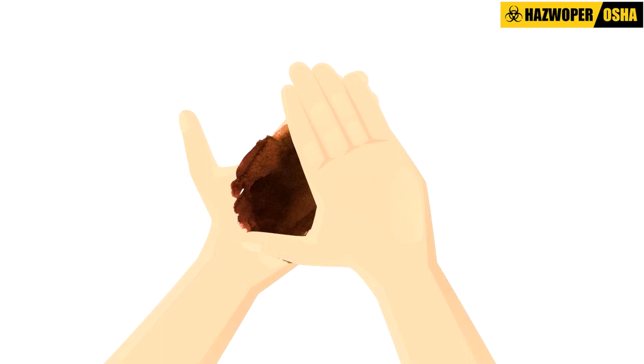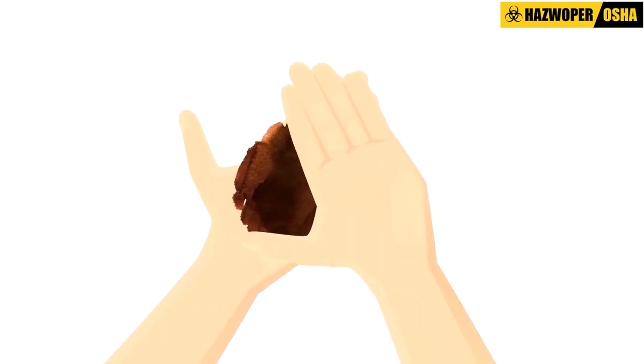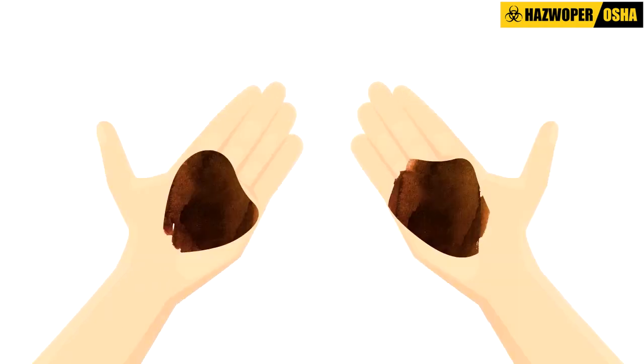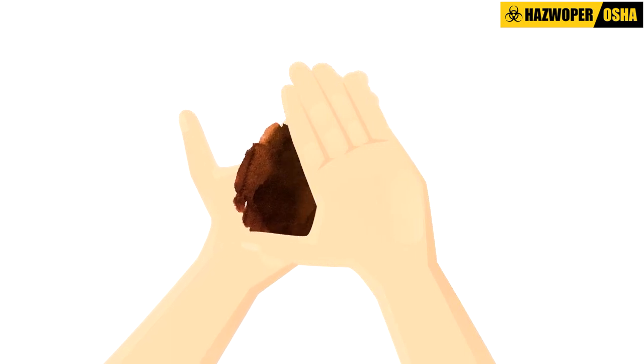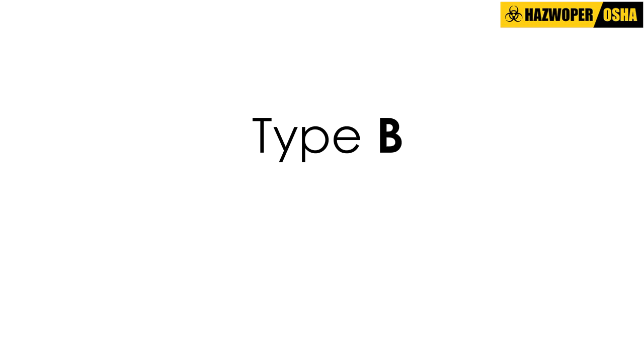For the dry strength test, the competent person takes a sample of dry soil. If it crumbles freely into individual grains, it is Type C soil. If it falls apart into clumps and those clumps break into smaller clumps, it is probably a combination of clay and gravel, sand, or silt, and is classified as Type B soil.